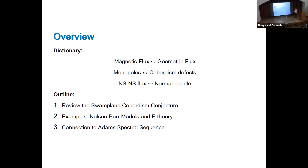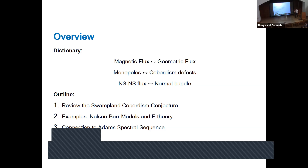The dictionary I'm going to set up replaces magnetic flux of the U(1) gauge field with geometric flux — namely, the space-time topology around some object. The objects which radiate magnetic flux are magnetic monopoles, and the objects which radiate geometric flux are what's called cobordism defects. These are the objects predicted by the cobordism conjecture, which I'll review. In the first example, we got a modified Gauss law by turning on NS-NS flux. In the case of cobordism, we're going to get a modified Gauss law by turning on a non-trivial normal bundle.